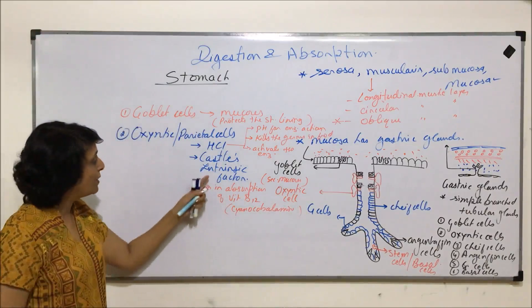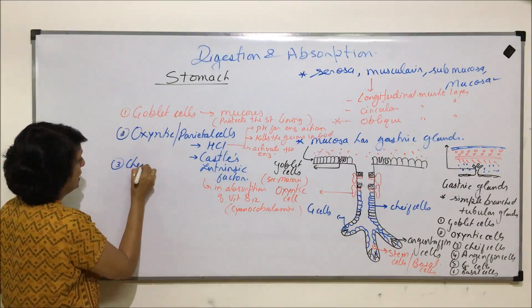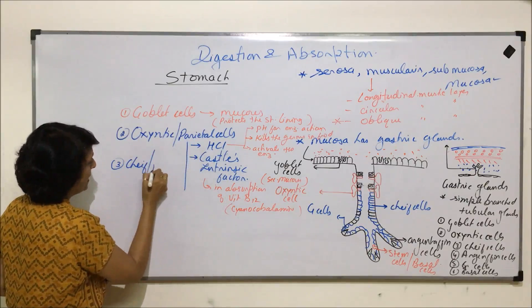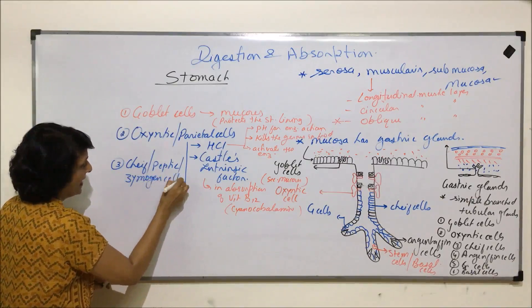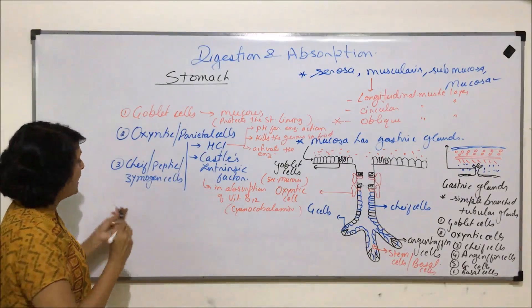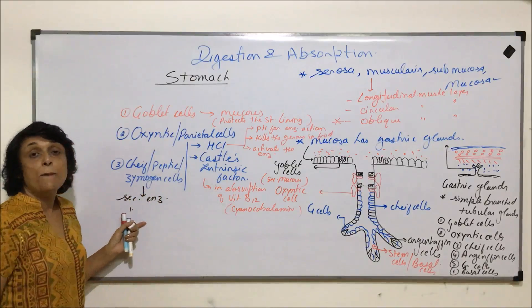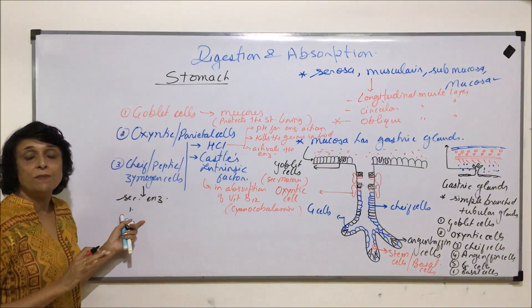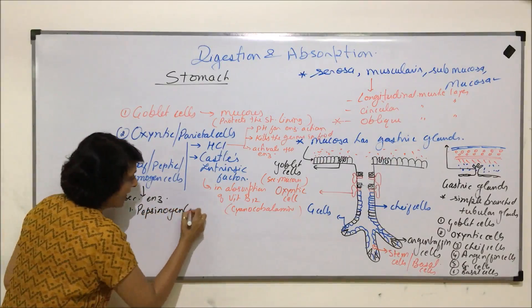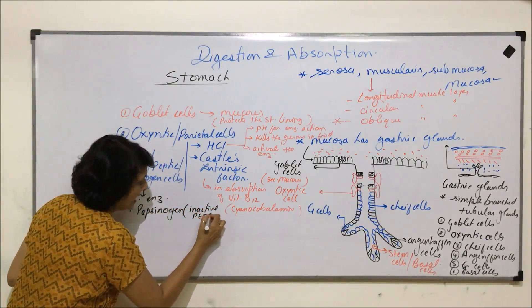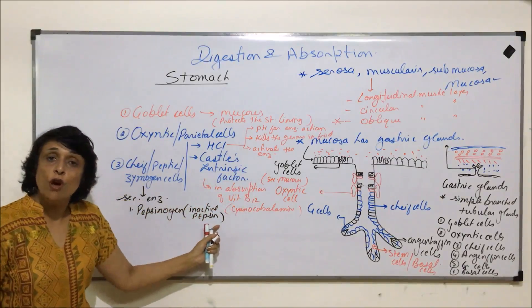The third cells which we have written here are chief cells. Chief cells are also known as peptic cells or they are called zymogen cells. They secrete enzymes. First is pepsinogen. It is inactive pepsin. All enzymes are secreted in their inactive form. And hydrochloric acid is going to activate this pepsinogen into pepsin when the food comes into the stomach.